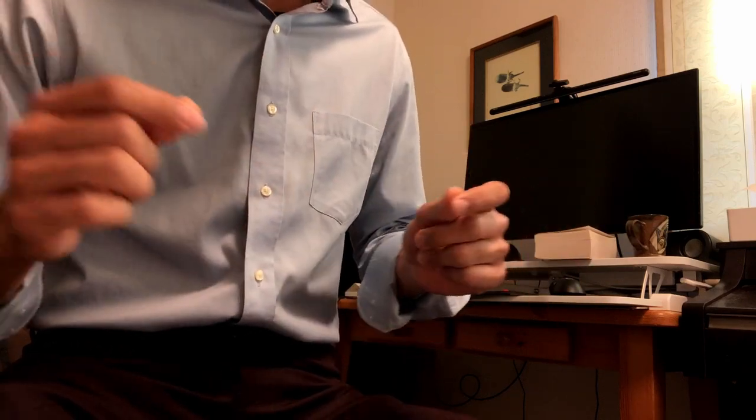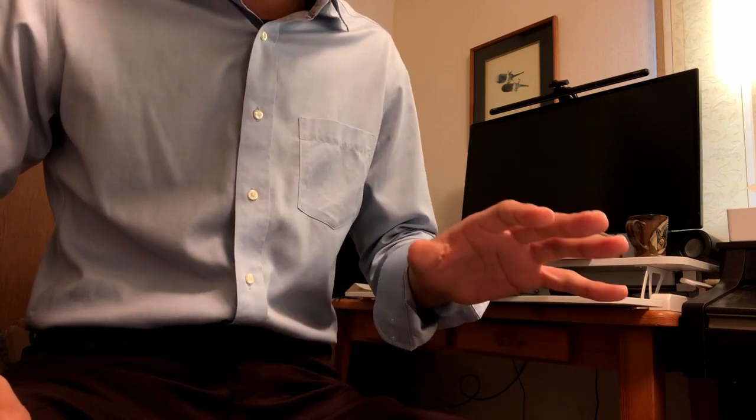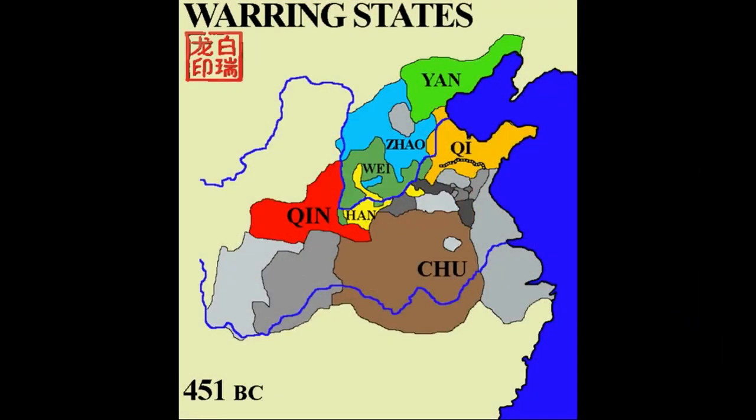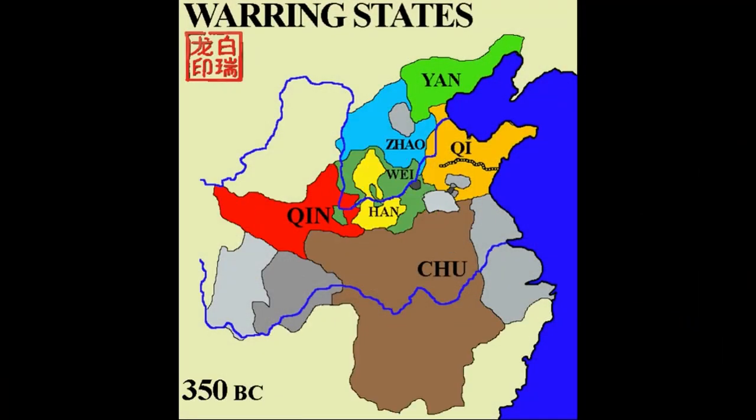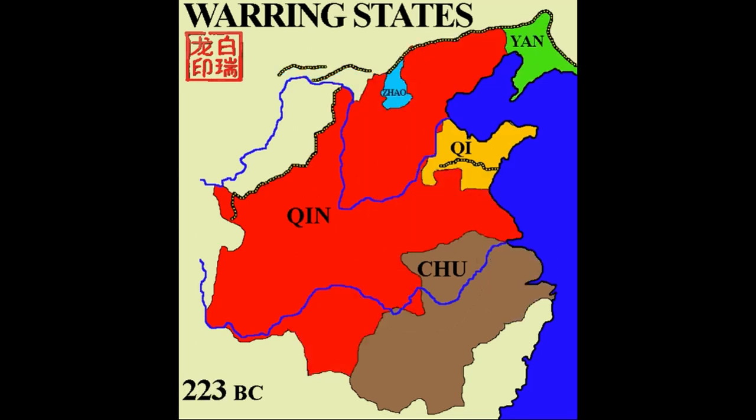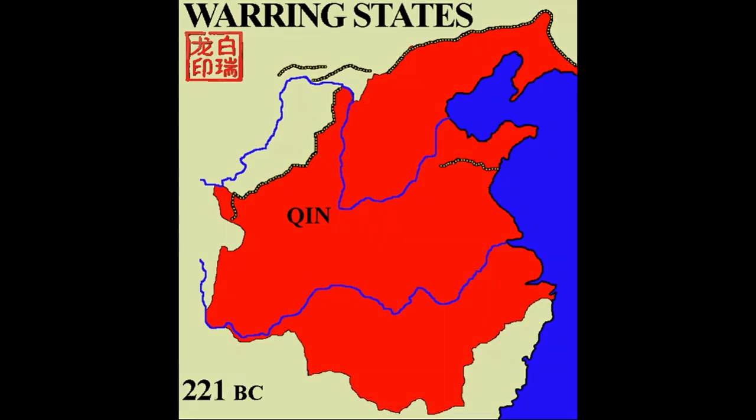The warring states period was a time of intense war between seven key dynasties, which spanned forth due to the political unrest and thirst for power. This period ends in 221 BC, when the Qin dynasty unifies China and becomes the first empire in Chinese history.